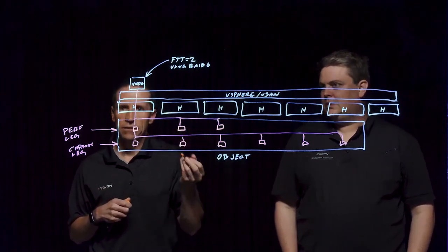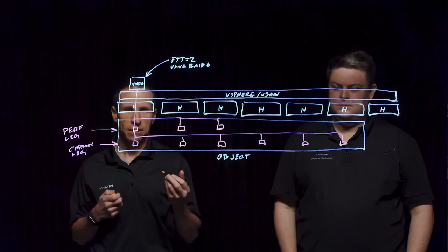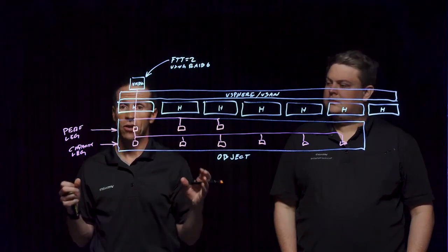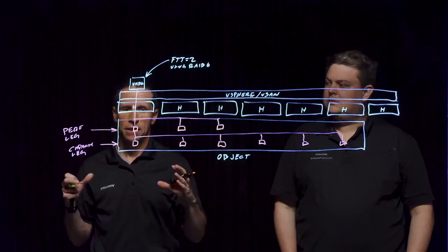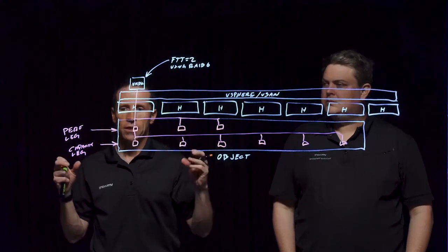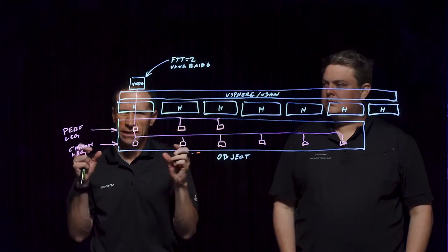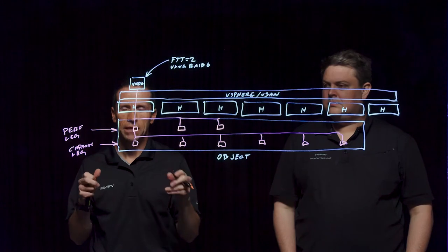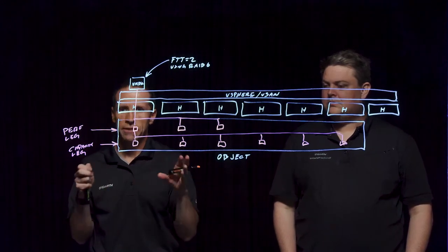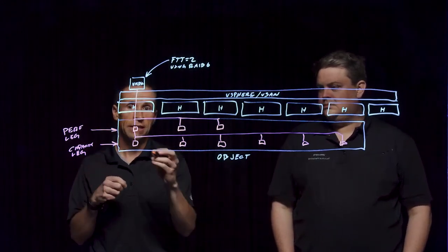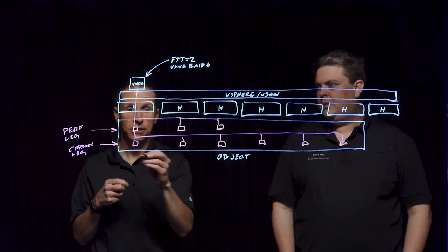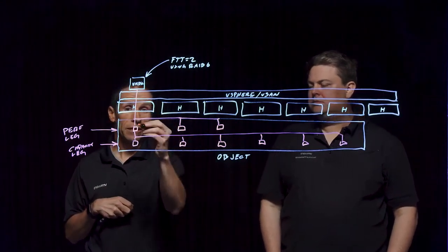One of the layers in the stack of the Express Storage architecture is a log structured file system. This is a way that we're able to coalesce a lot of these little small writes and make them into this really efficient, fully aligned block.